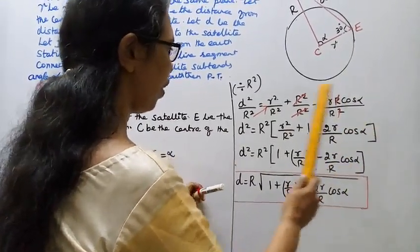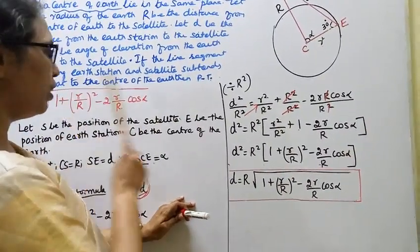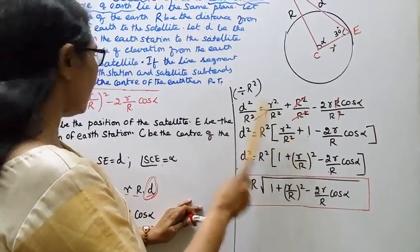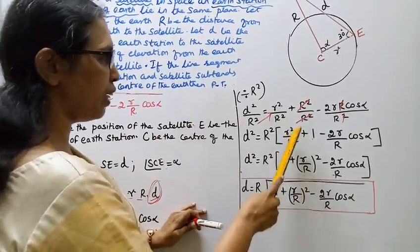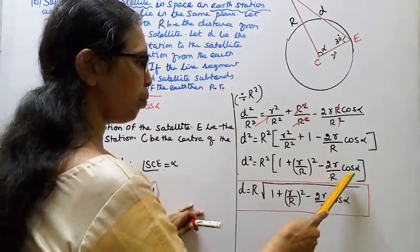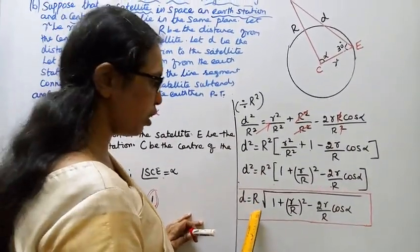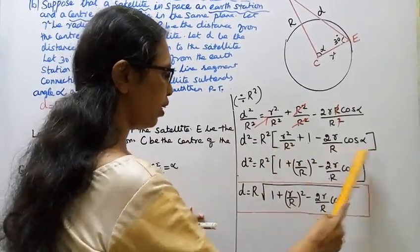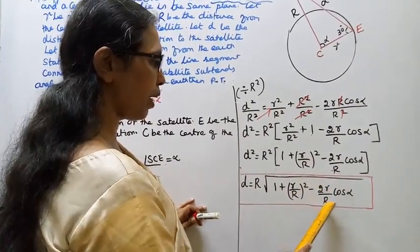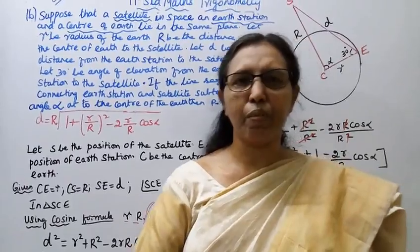So d² = R² times [1 + (small r / capital R)² − 2·(small r / capital R)·cos alpha]. Taking the square root, d = R·√[1 + (r/R)² − 2·(r/R)·cos alpha]. This is the required answer. This channel helps you to get hundred marks. Please subscribe and click the bell icon.